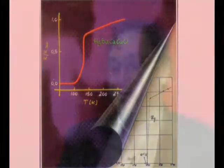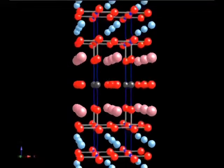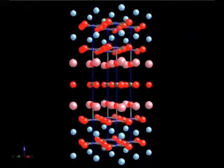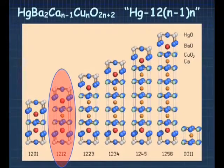For example, there is a family of compounds: thallium barium calcium copper oxide, mercury barium calcium copper oxide, which exists with transition temperatures up to 132 degrees Kelvin. This is somewhat neglected.